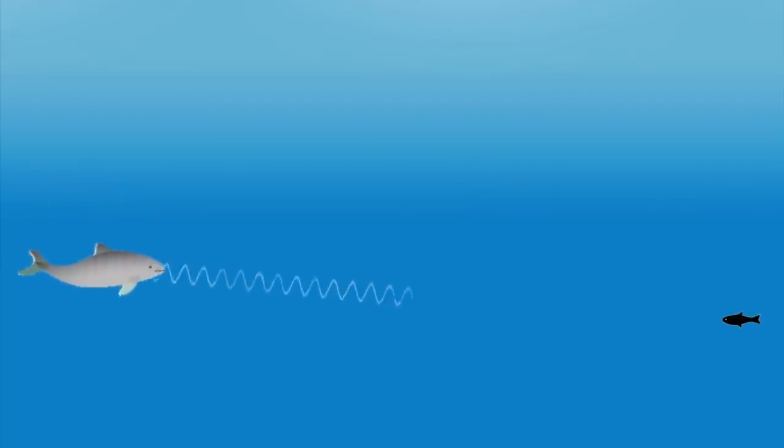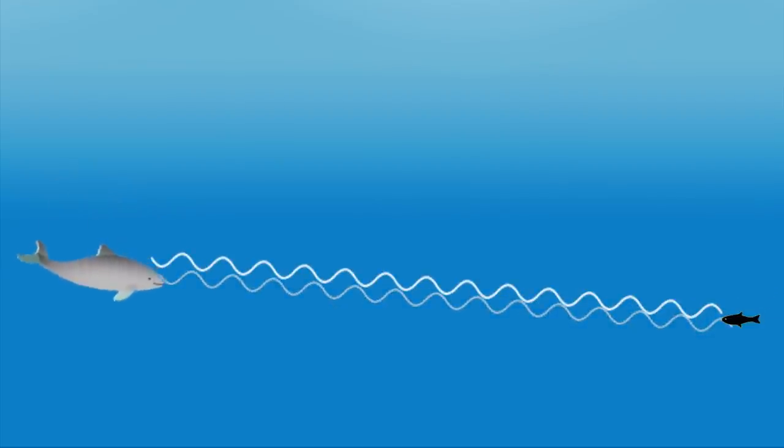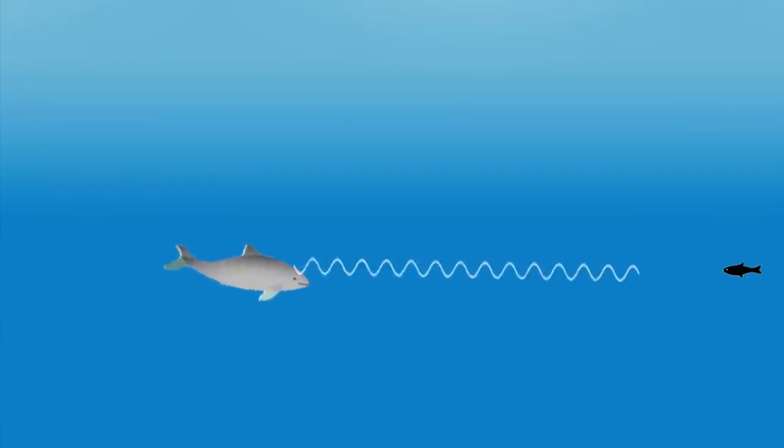If this object is prey, the porpoise will close in on it. The closer the porpoise gets, the more clicks it will release. The click rate increases to several hundred clicks per second just as the prey is captured.